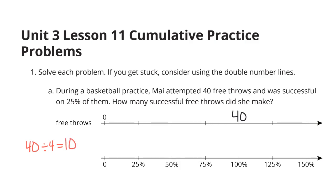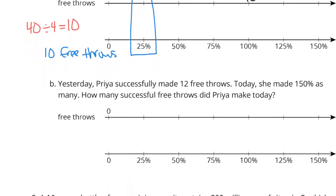So each number here we can go 25% is 10, 50% is 20, 75% is 30, and then obviously 40 is our 100%. Well, here's our solution. She made 25% of the free throws, so she made 10 free throws.